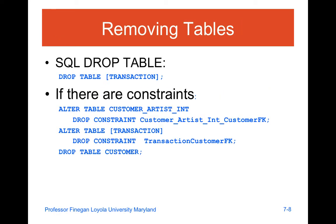If we are looking at the DROP TABLE command, you've seen this in previous lectures. If there are constraints, what you're going to first want to do is start with an ALTER TABLE command and then drop the constraints. Think of it sequentially — you'll go in for each table, ALTER TABLE customer, and drop the constraint, and then drop the table.